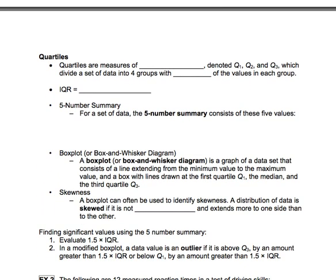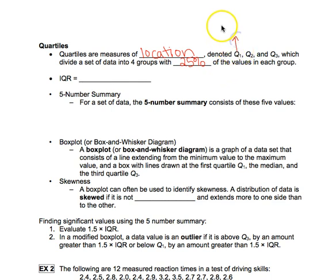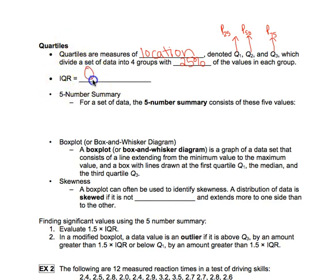Along with percentiles come quartiles. Quartiles are just a specific type of percentile, and they are also measures of location. Instead of using P, we denote them Q1, Q2, and Q3. Quartiles divide a set of data into four groups with 25% of the values in each group. Q1 is the same as P25, Q2 is the same as P50, and Q3 is the same as P75. The IQR — interquartile range — is needed to find outliers or significant values. You simply take the third quartile and subtract the first quartile.